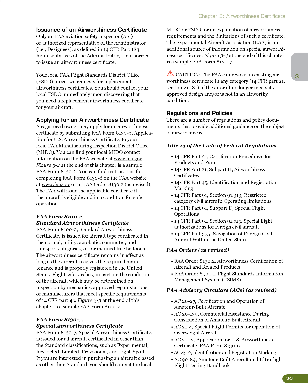Applying for an Airworthiness Certificate: A registered owner may apply for an Airworthiness Certificate by submitting FAA Form 8130-6, Application for U.S. Airworthiness Certificate, to your local FAA Manufacturing Inspection District Office, MIDO. You can find your local MIDO contact information on the FAA website at www.faa.gov. Figure 3-2 at the end of this chapter is a sample FAA Form 8130-6. Instructions for completing FAA Form 8130-6 can also be found on the FAA website or in FAA Order 8130-2, as revised. The FAA will issue the applicable certificate if the aircraft is eligible and in a condition for safe operation.